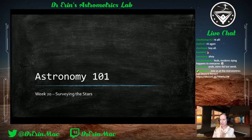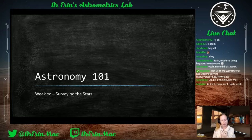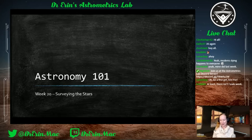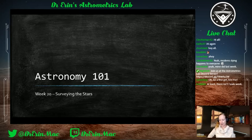This week we're going to be talking about how we classify stars — the different properties that we find and how we can learn about them. We'll be talking about spectral classification. Next class in two weeks we're going to be talking about exoplanets, and then that's going to be it for Astronomy 101.